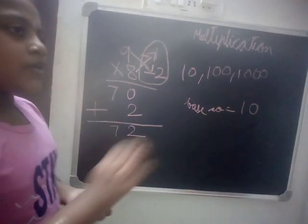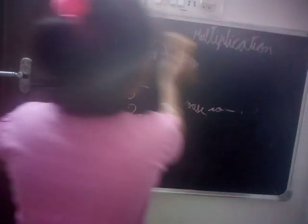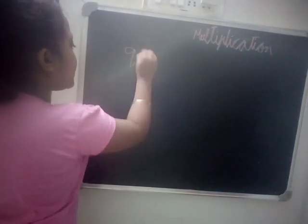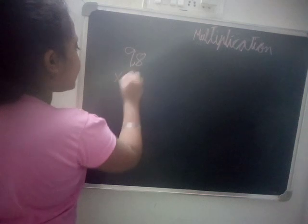You might think we can just use tables, which would be easier — but when we are solving double digit numbers like 98 into 86, the base method really helps.